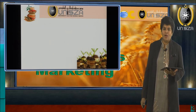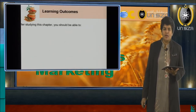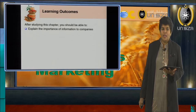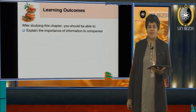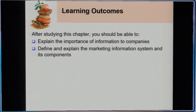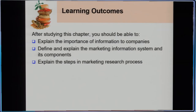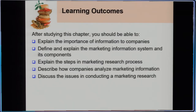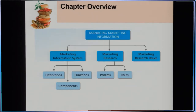Let us look into the learning outcomes for this chapter. After studying this chapter, you should be able to explain the importance of information to a company, define and explain the marketing information system and its components, explain the steps in the marketing research process, describe how a company analyzes marketing information, and discuss the issues in conducting marketing research.